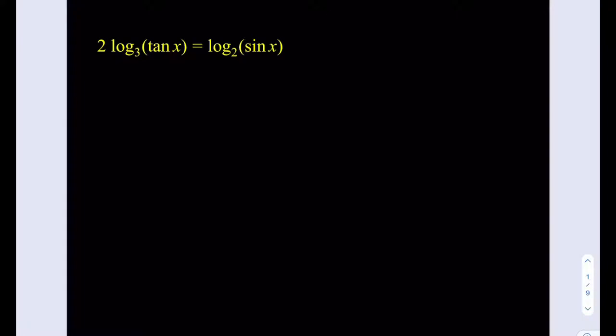We have 2 times the logarithm of tangent x base 3 equals log of sin x base 2. First of all, we have two different bases. I'm going to start by moving that 2 over. Let's take this 2 here and move it over as an exponent. So now I can write it as log of tangent squared x equals log of sin x. That's going to be my first step.